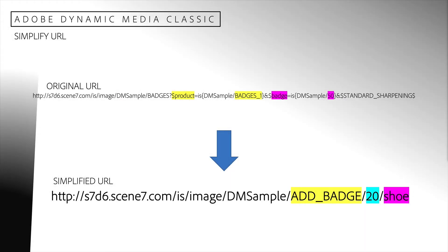Our URL looks pretty complex. I can see that the critical part of the product parameter is set to "badges_one" and the badge parameter is set to 50. I would like to simplify this URL so that I can use it in a very clear and straightforward way. I will structure it so that we can add an "add badge" command, followed by badge name, followed by the product name. In this case, I will add a 20% off badge to a product named "shoe." Let's see how we can create a rule set to do this.